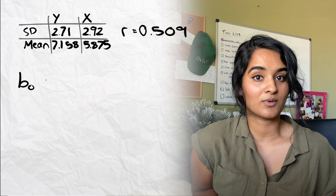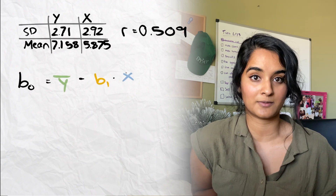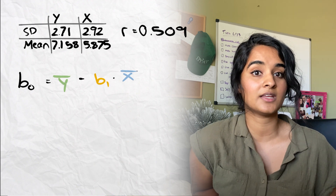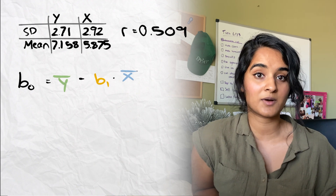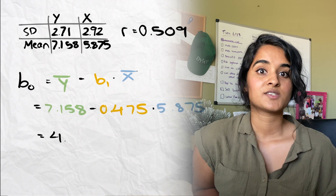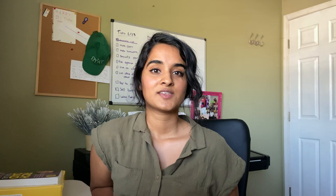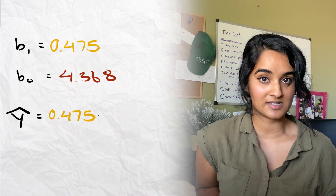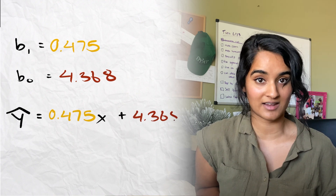To calculate b0, we do y-bar minus b1 times x-bar, where y-bar is the average of all the y values and x-bar is the average of all the x values. We plug in all the respective numbers and end up with b0 = 4.368. Now we have all the numbers — let's plug them into our regression line.